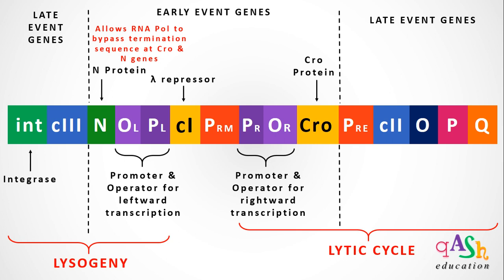Among the late event genes which code for lysogeny, the INT gene codes for the integrase protein. Integrase is required for the integration of the phage DNA into the bacterial DNA. Another late event gene in lysogeny is the C3 gene, which codes for the C3 protein — a transcriptional activator of lysogeny.